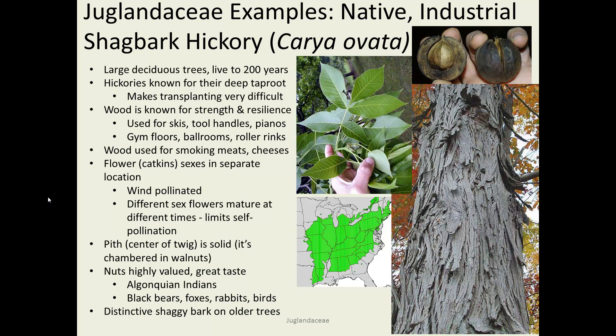Shagbark hickory nuts are very popular with bears, foxes, rabbits, birds — just about anything. The wood is hard enough to be used in high-traffic areas like gym floors and roller rinks. Hickories are known for a very deep taproot, and all Carya are known for that, making them extremely difficult to transplant. If you want one in your landscaping, you've pretty much got to grow it from seed. Getting that taproot to transplant is basically unsuccessful — the tree grows for a while and then a high wind comes and over it goes.